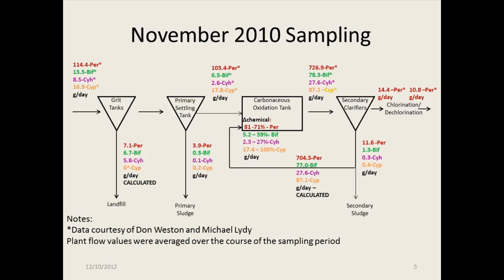Here I've simplified the diagram. This is the result of the mass balance. I just really wanted to give you an idea of the scale of the loads going through the treatment plant. These are all in grams per day, and these are pretty representative of what we saw every time — this shows one event we took in November. Permethrin was the highest and was present in every event. Of the other three, bifenthrin and cyhalothrin were sometimes present, sometimes not. Cypermethrin was very consistently there, but Dawn didn't measure it in the effluent, so it was completely removed at each sampling event.